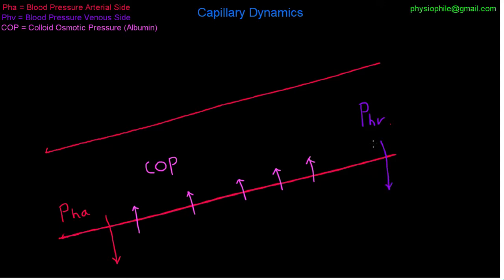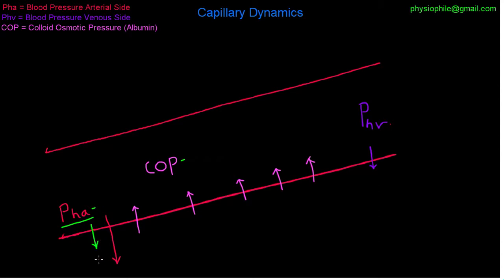If you sum up these pressures: the hydrostatic pressure pushing out — due to the force of contraction of the left ventricle — and the colloid osmotic pressure pulling fluid in, because the hydrostatic pressure is larger than the colloid osmotic pressure, the net force is going to push fluid out of the capillary on the arterial side. Over on the venous end, the colloid osmotic pressure is greater than the hydrostatic pressure, so it's going to pull fluid back in on that side.